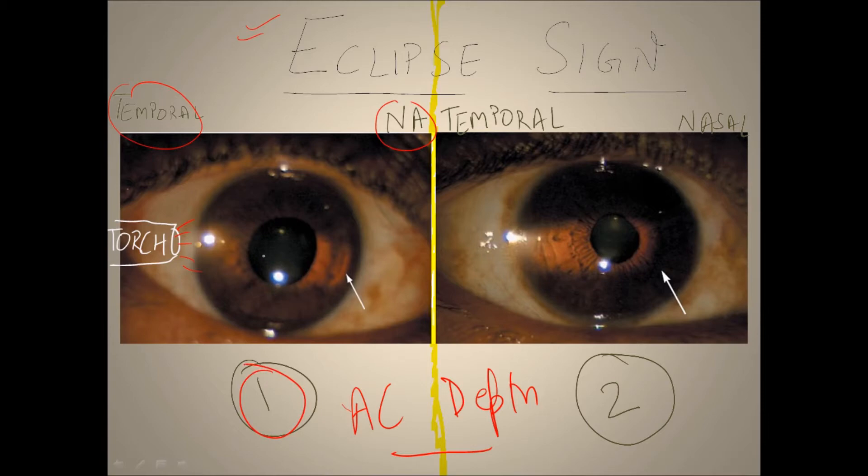With uniform depth, we can see the illumination of the light here and also here, as the arrows point. This is depicting the normal anterior chamber depth, with no shallow anterior chamber present.